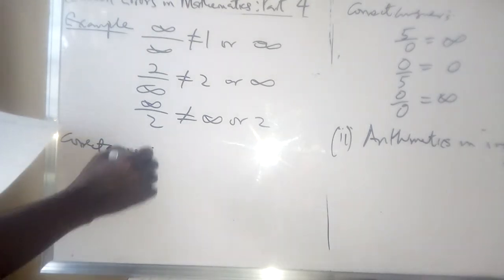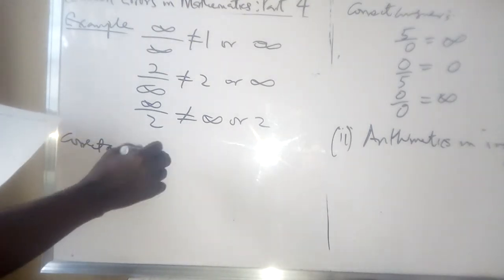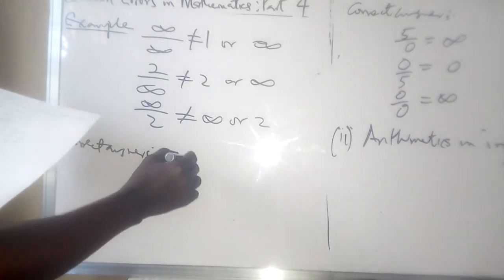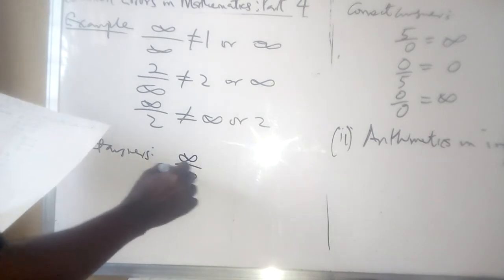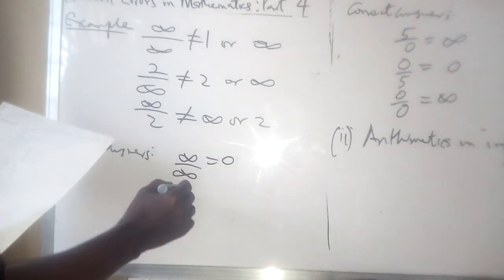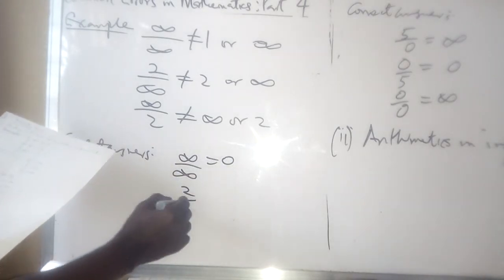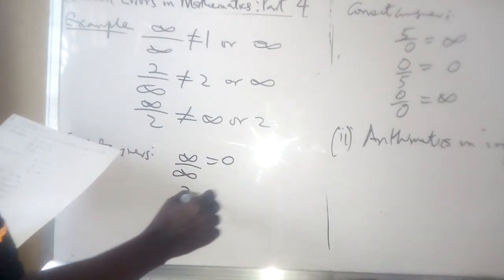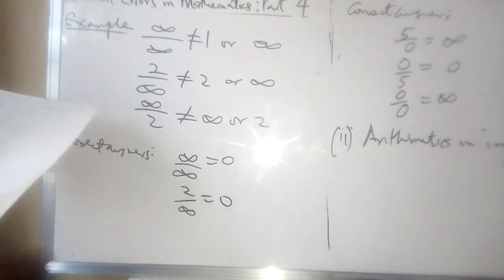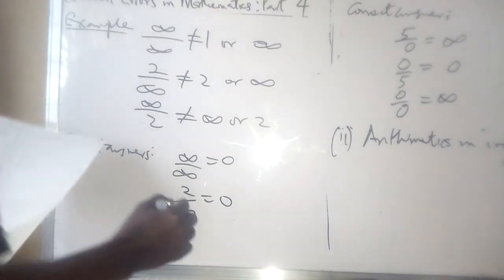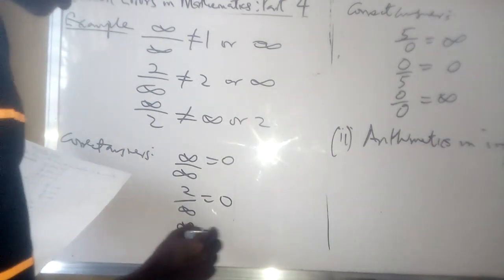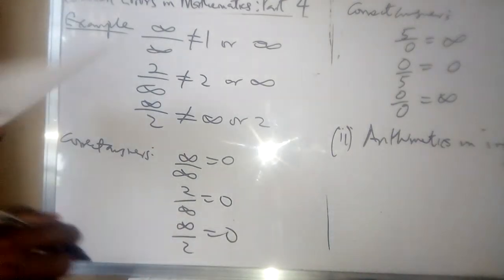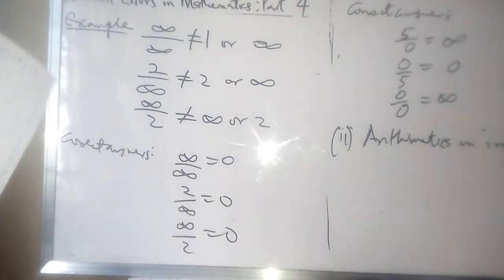The correct answers are: infinity all over infinity is equal to 0, and 2 all over infinity is equal to 0. Infinity all over infinity is similarly equal to 0.